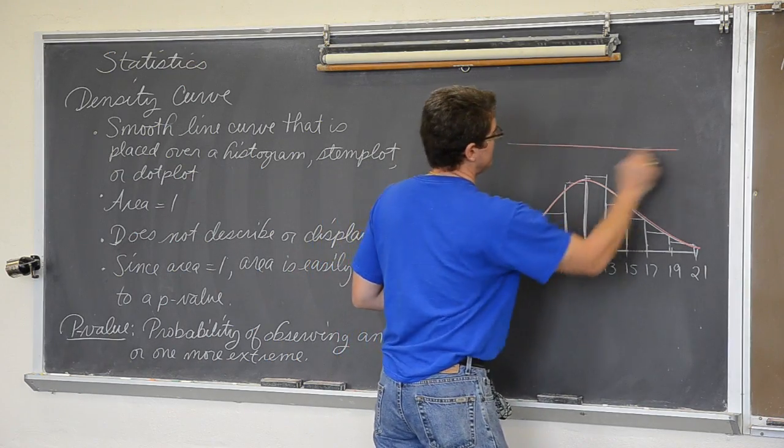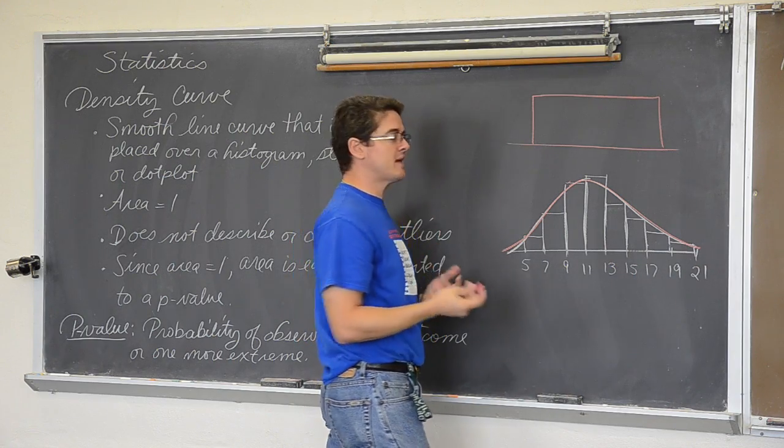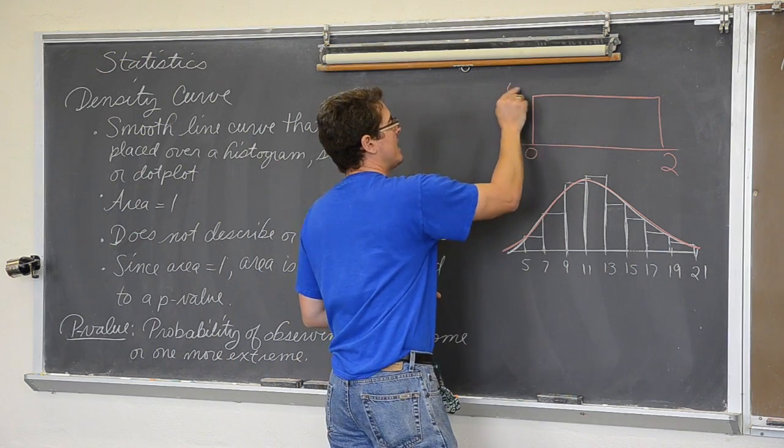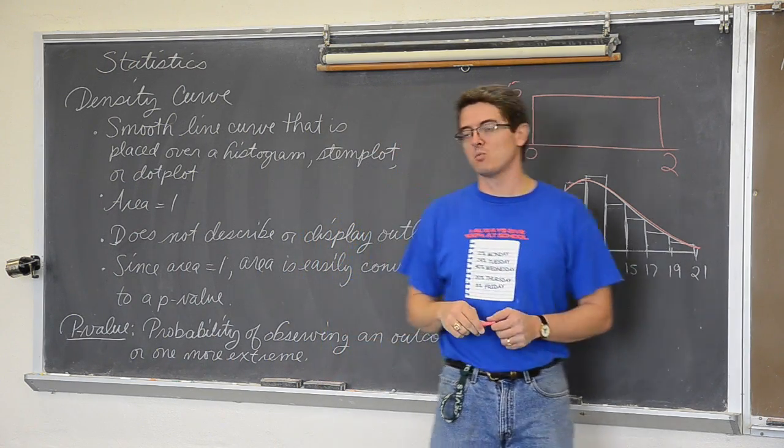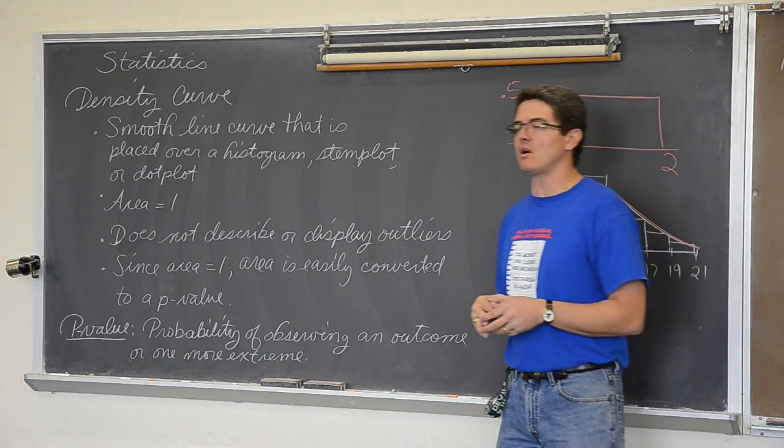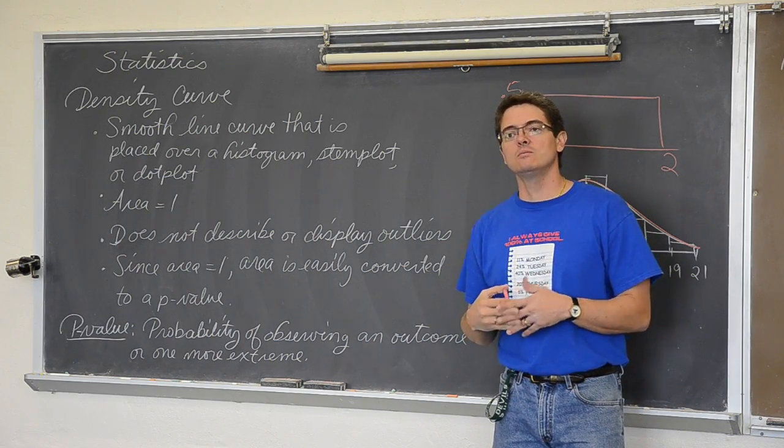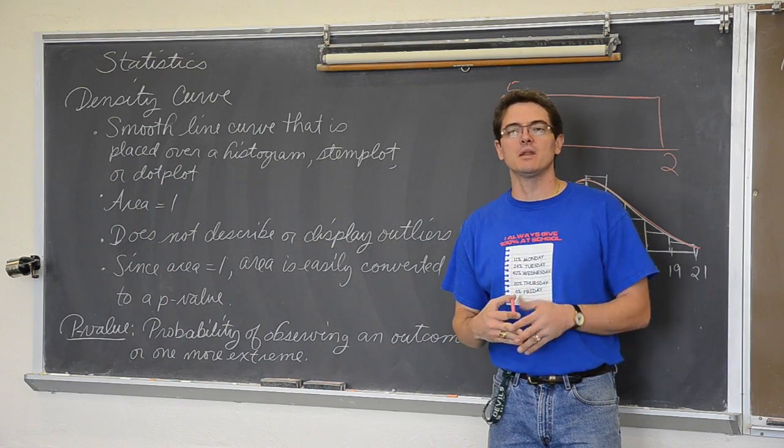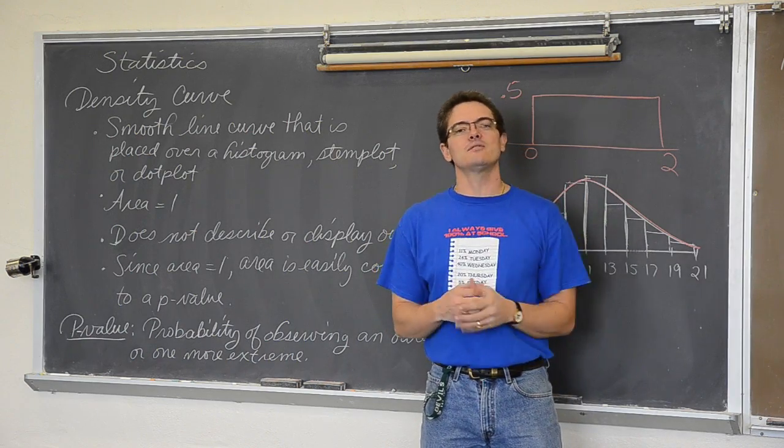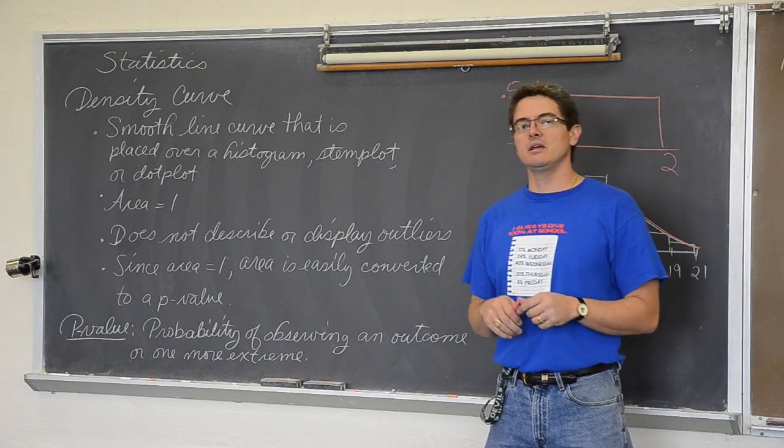Density curves do not have to be a bell shape. You can even have a density curve that is in the area of a rectangle to display completely random data. Like maybe this goes from zero to two, but since the area has to be one, it would only have a height of 0.5 to make sure the area equals one. It does not describe or display outliers.